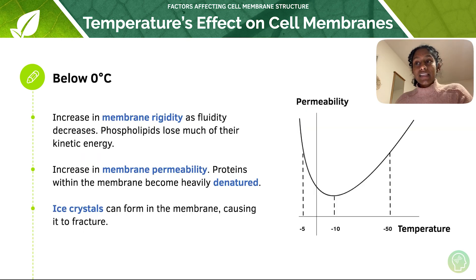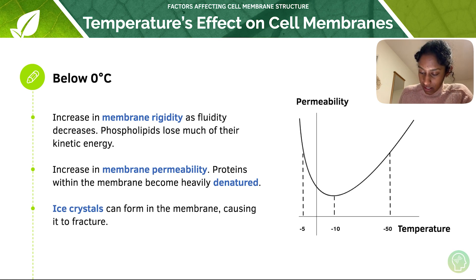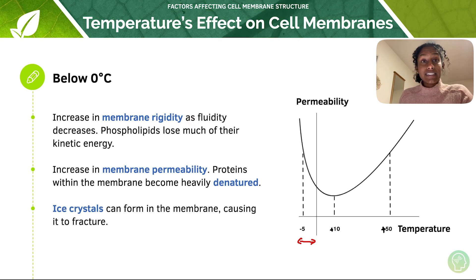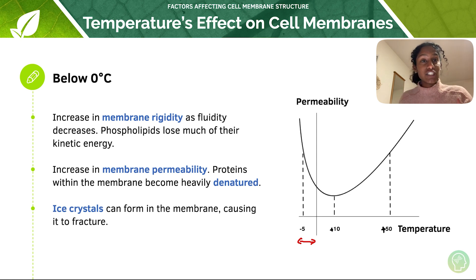Let's have a think about this graph. Below zero degrees, we have an increase in membrane rigidity as fluidity decreases, and phospholipids lose much of their kinetic energy, so you get a more rigid membrane.